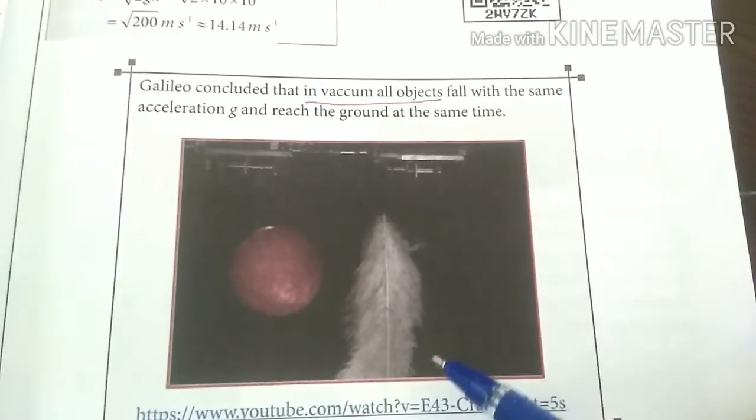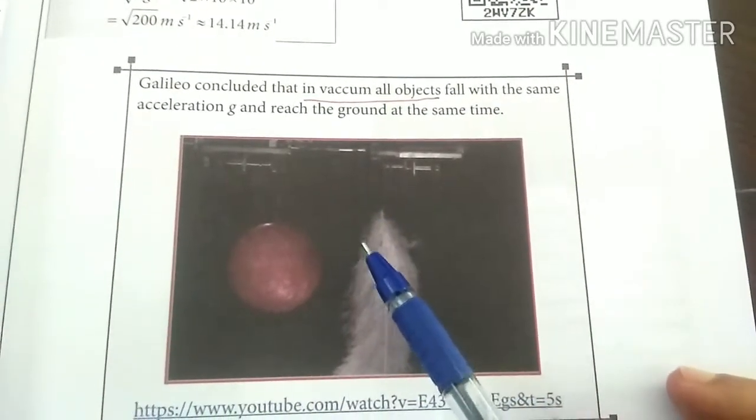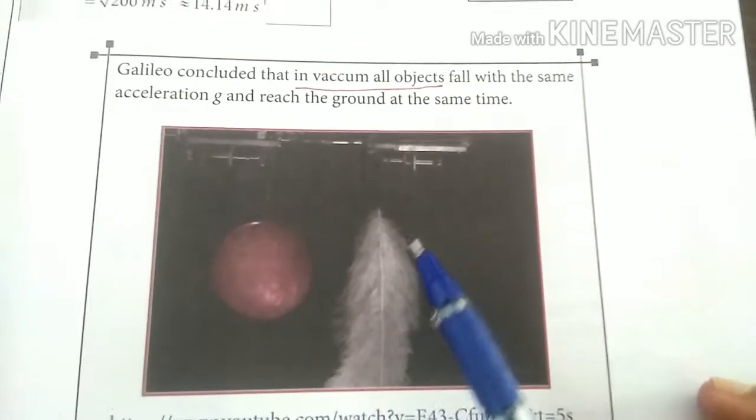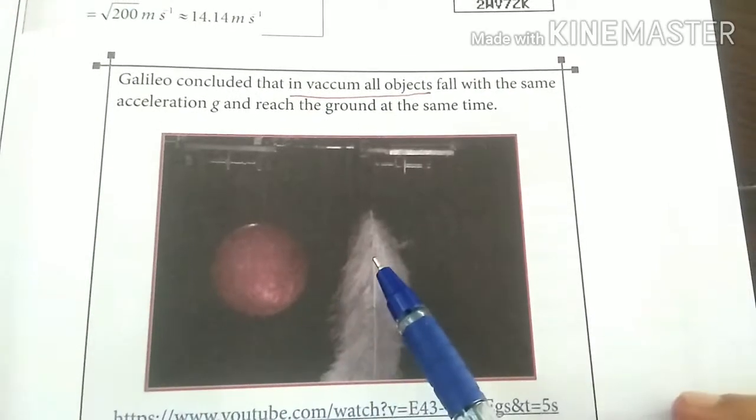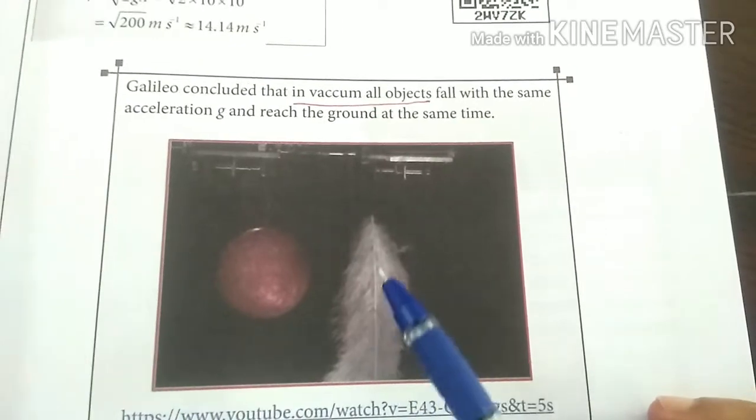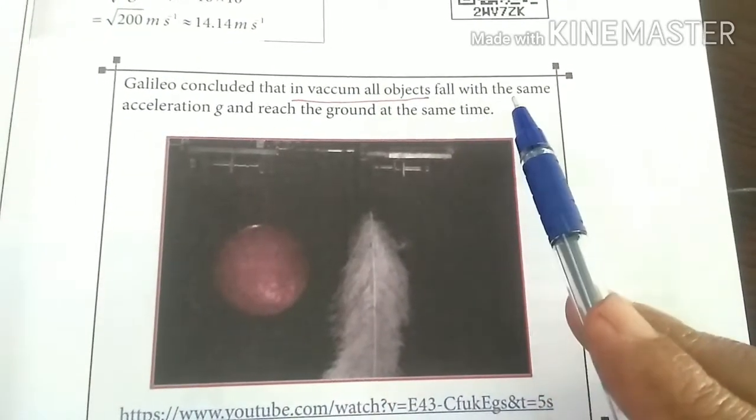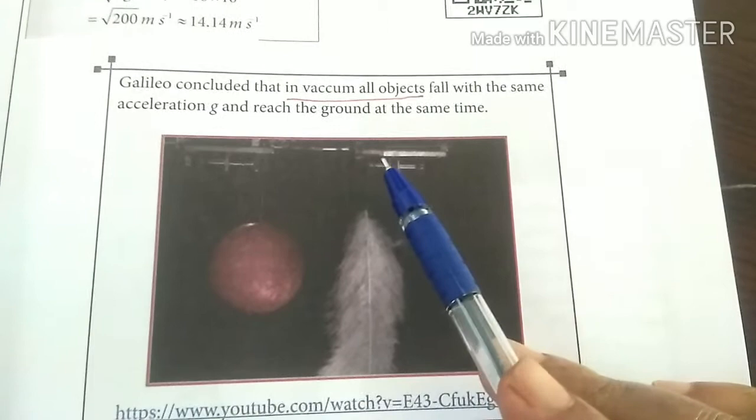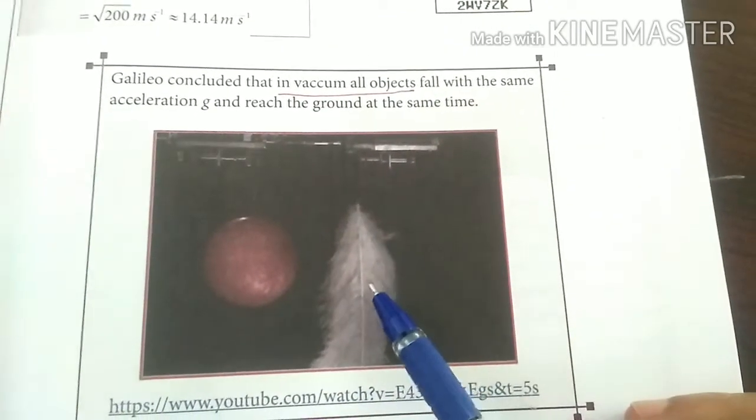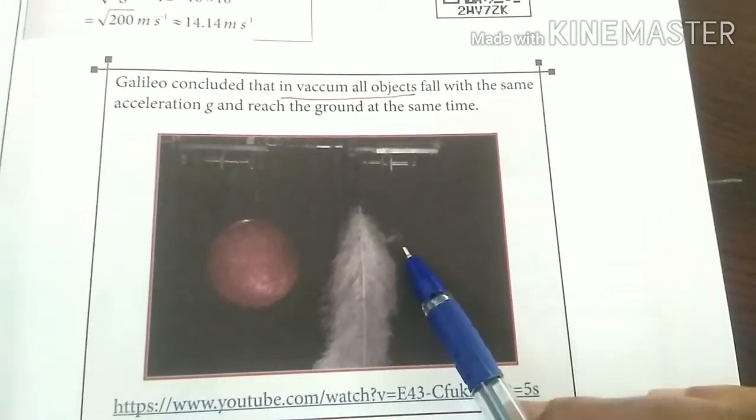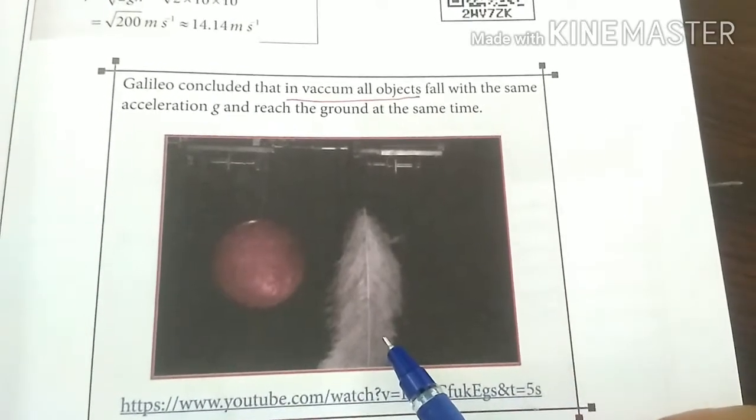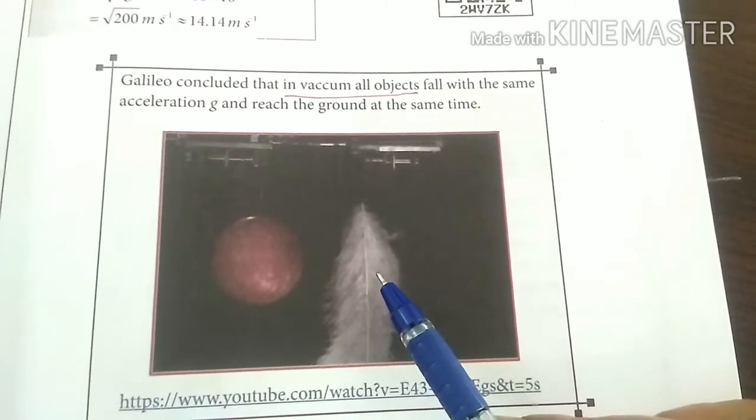Galileo concluded that in vacuum, all the objects fall with same acceleration and reach the ground at the same time.